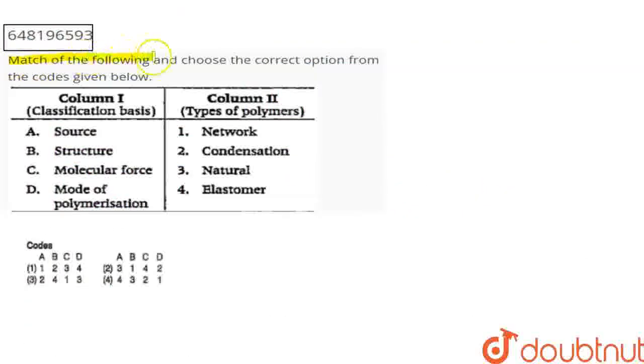The question is that you have to match the following and choose the correct option from the codes given below. So, let's match column 1 and column 2. Column 1 is the classification basis and column 2 is the types of polymers.